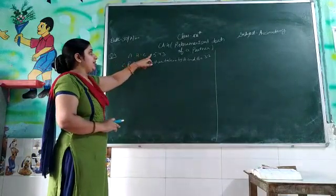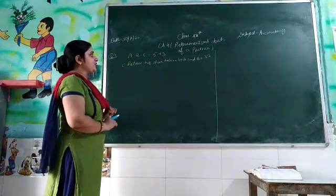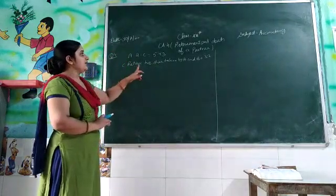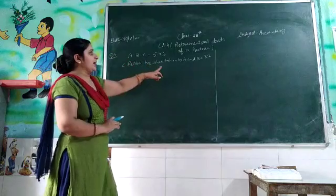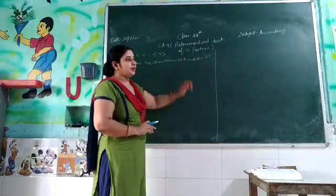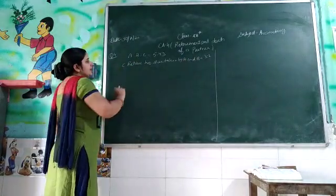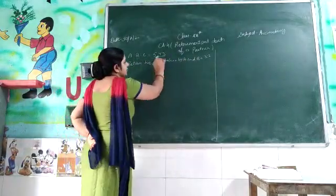The old ratio of A, B, and C is 5:4:3 and C retires from the firm. C's share is taken by A and B in the ratio of 3:2. We have to calculate the new profit sharing ratio of A and B.